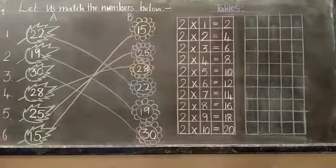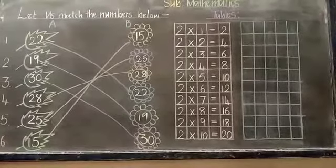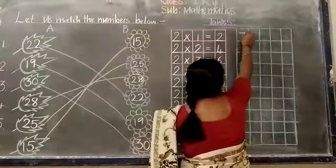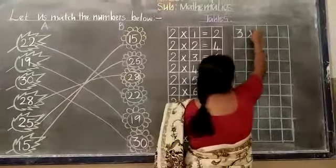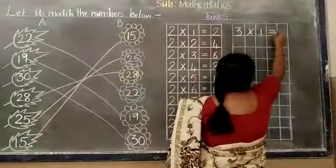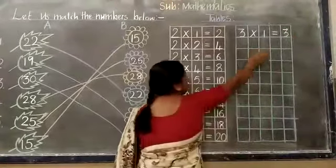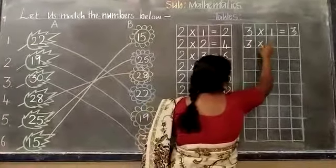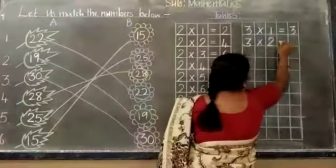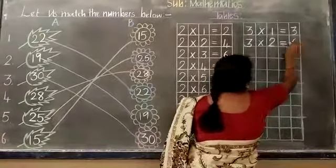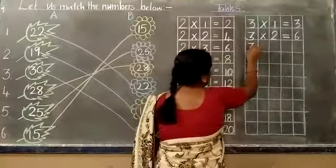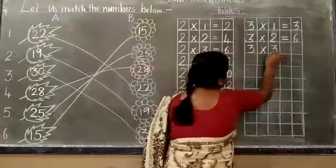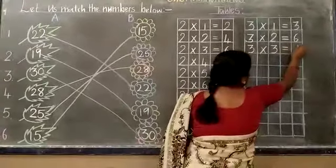Now. Let's turn to learn. 3 x 1 is equal to 3. 3 ones are 3. 3 x 2 is equal to 6. 3 into 6. 3 into 3 is equal to 9.